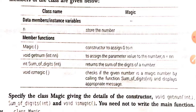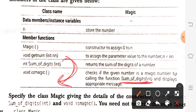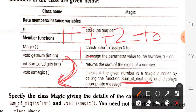Now, sumOfDigits — we have to call this function repeatedly inside isMagic. We know that sumOfDigits is calculated again and again: first 1 plus 7 plus 2 gave 10, then again 1 plus 0 gave 1. So we need to repeat the process until we get a single digit in our number.